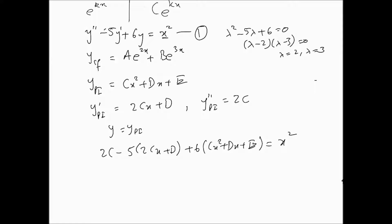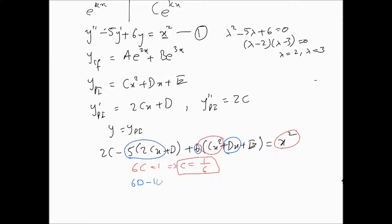Substituting into the equation: 2C - 5(2Cx + D) + 6(Cx² + Dx + E) = x². Comparing x² coefficients: 6C = 1, so C = 1/6. Comparing x coefficients: 6D - 10C = 0, and since C = 1/6, this gives D = 5/18.